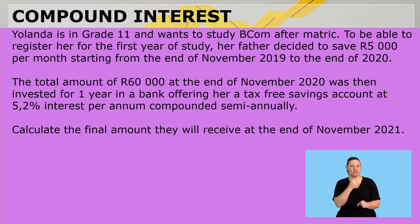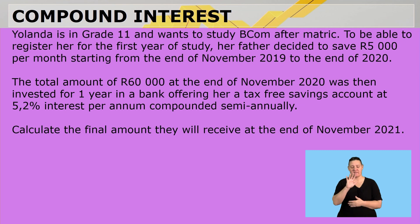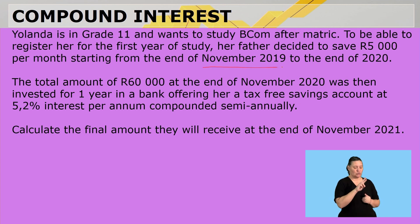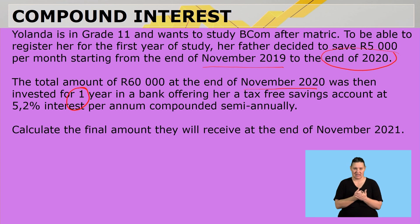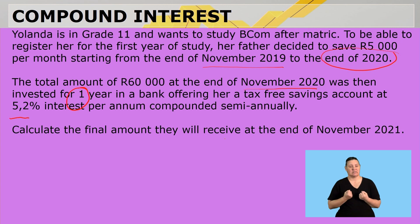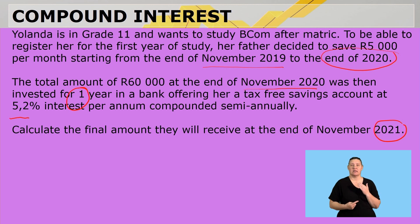Yolanda is in Grade 11 and wants to study BCom after matric. To register for first year, her father decided to save 5,000 rand per month from the end of November 2019 to the end of 2020. The total amount of 60,000 rand saved was then invested for one year in a tax-free savings account with an interest rate of 5.2%. Calculate the final amount they will receive at the end of November 2021.